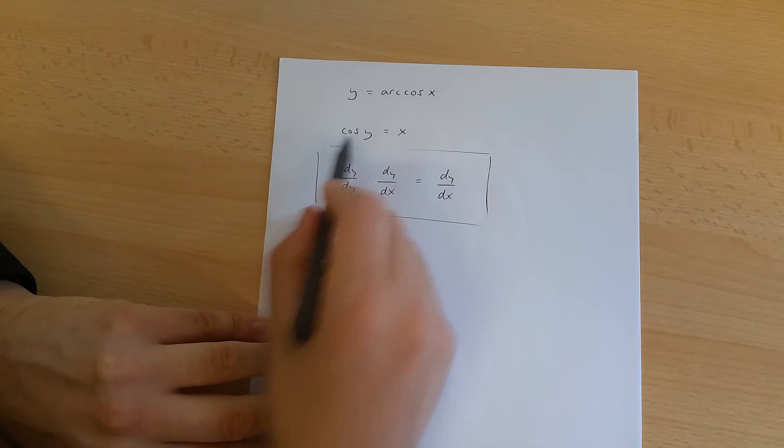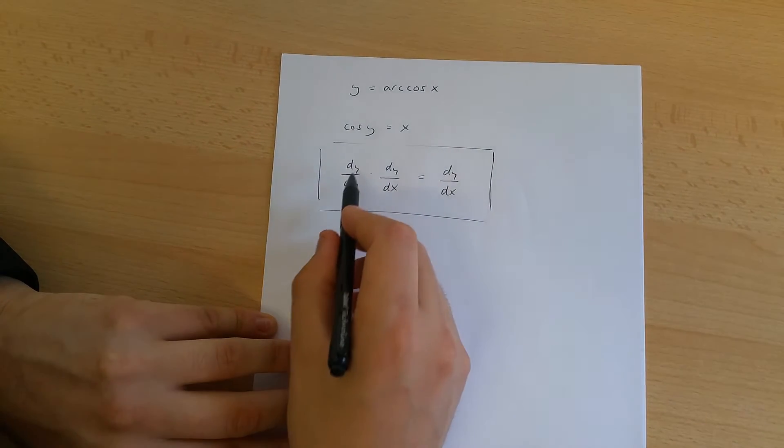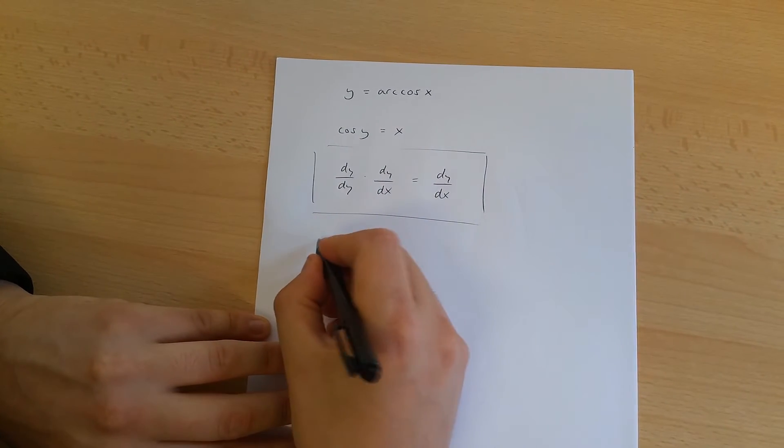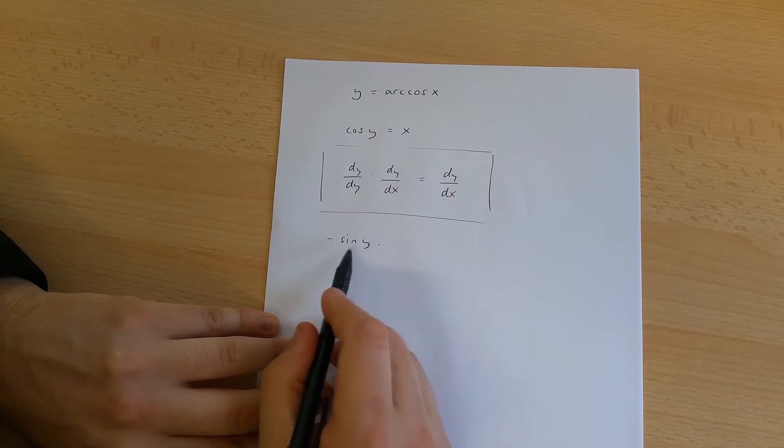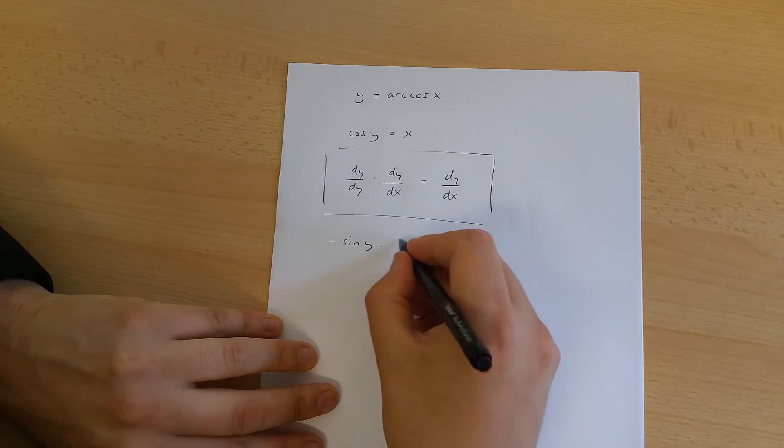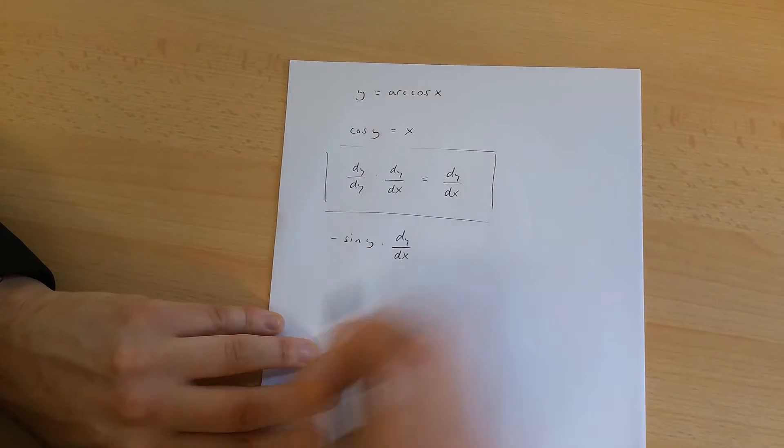If we've got cos y over here, dy over dy is going to be equal to minus sine y. And this is going to be multiplied by dy over dx.